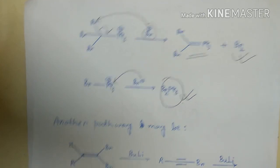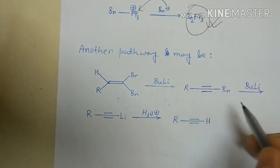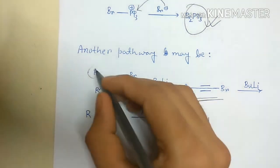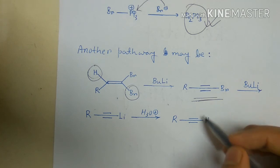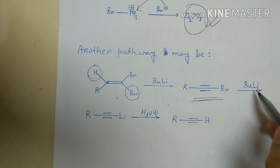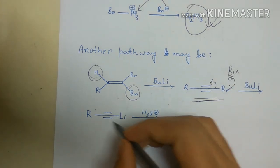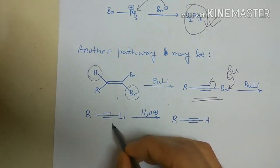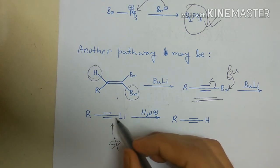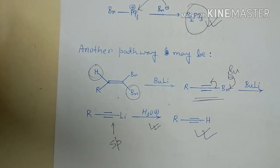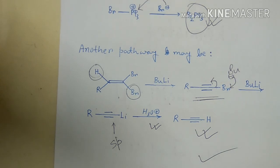Another possible pathway involves butyl lithium acting via the previously described elimination route — where butyl anion removes a hydrogen anti-periplanar to a leaving group — or the butyl anion can attack the sp carbon of the dibromoalkene to give a carbanion stabilized by the sp carbon. After treatment with water/acid, we obtain the desired terminal alkyne. This completes the full mechanism of the Corey-Fuchs reaction.